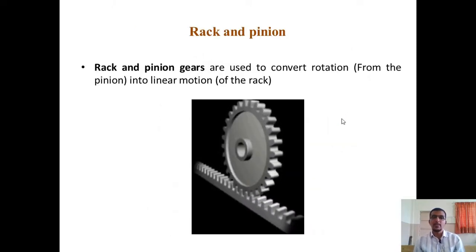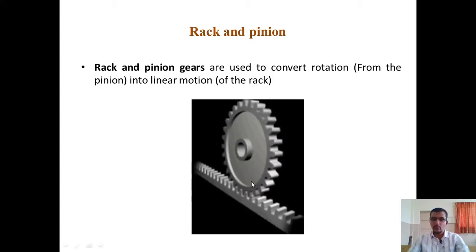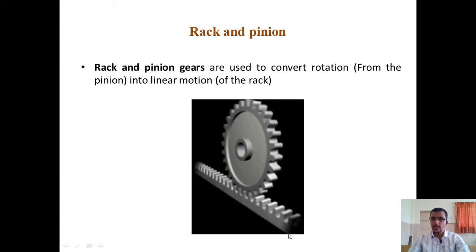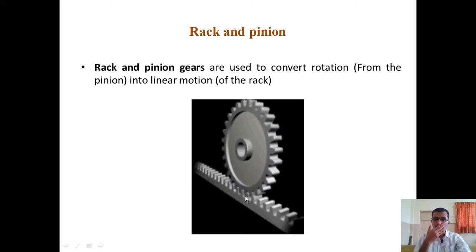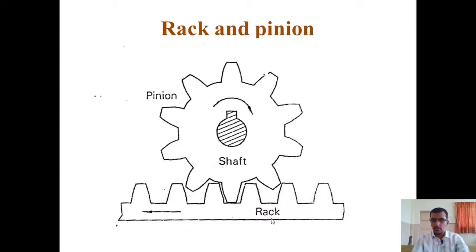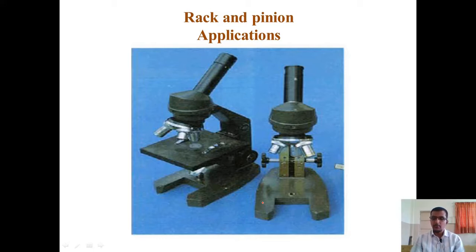Rack and pinion gears are extremely helpful for converting rotational motion into linear motion. The horizontal member is called the rack and the rotating member is the pinion — usually the pinion is the driver. The rotation of the shaft is converted into the linear motion of the rack. A classic application is in microscopes, where turning the knob moves the platform up and down using a rack and pinion gear.